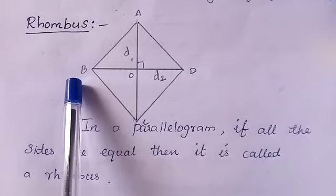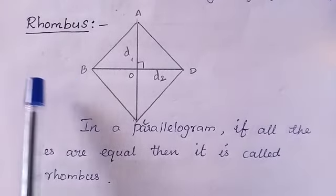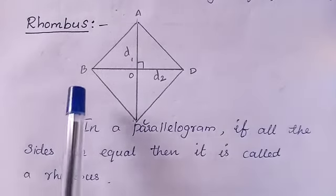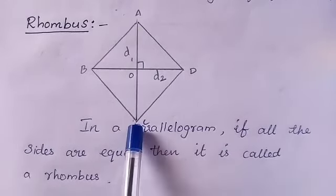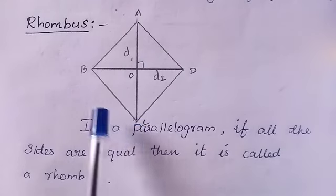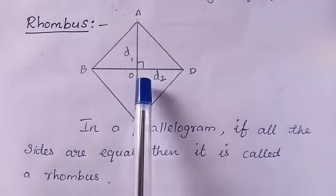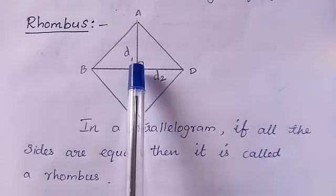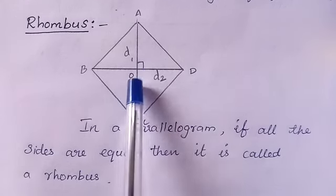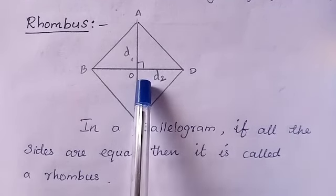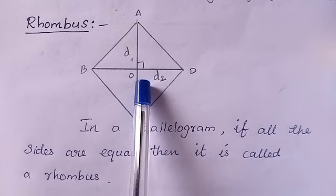Parallel means the two sides never meet each other at any point. In a rhombus, AC is one diagonal and BD is another diagonal. These two diagonals intersect at point O, and the angle at O equals 90 degrees — that means a right angle.